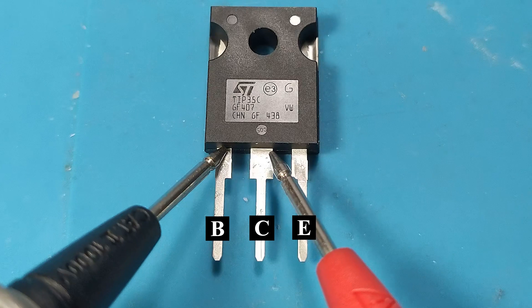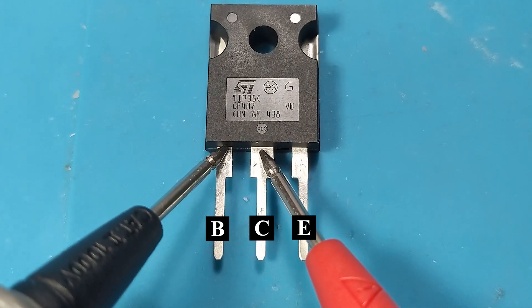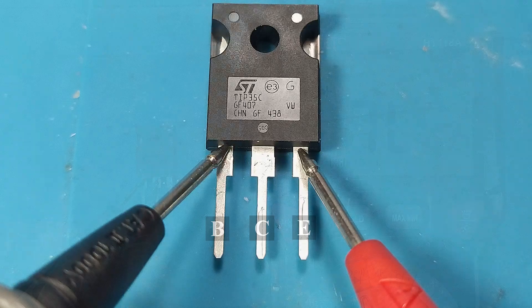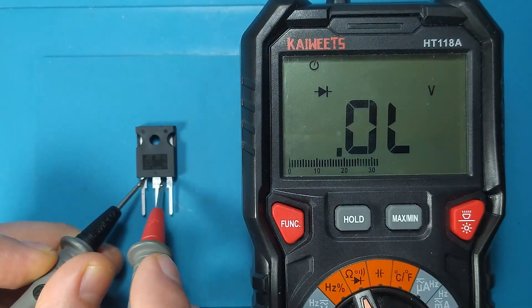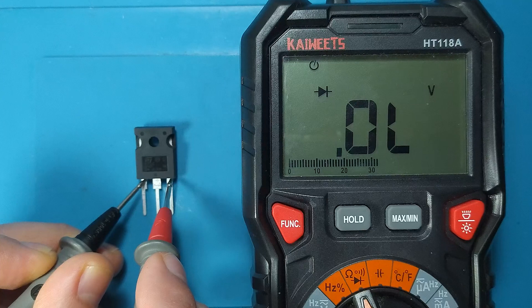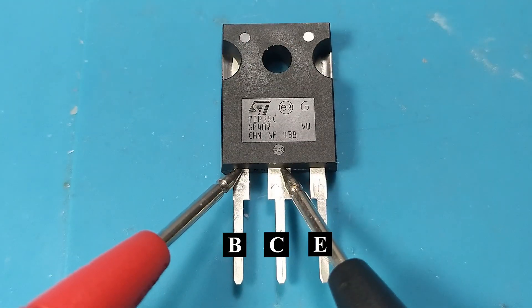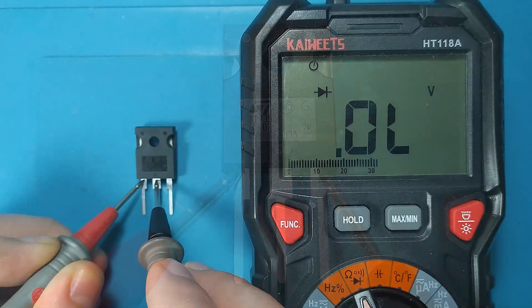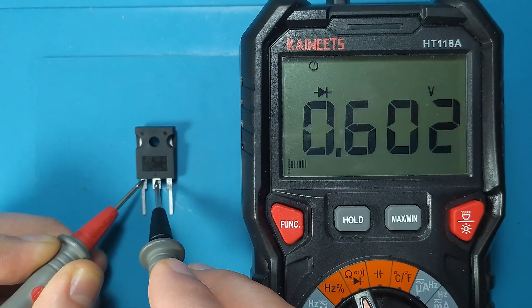With the black probe on the base and the red probe on the emitter and collector, we should not have any voltage drop. With the red probe on the base and the black probe on the emitter and collector, we should have a voltage drop of about 600 millivolts.